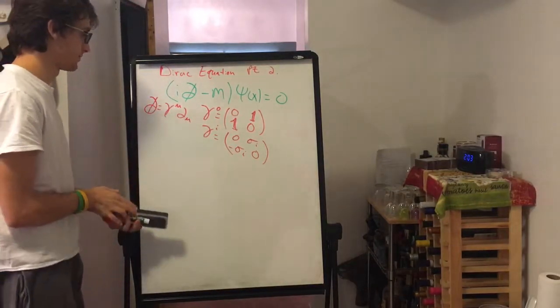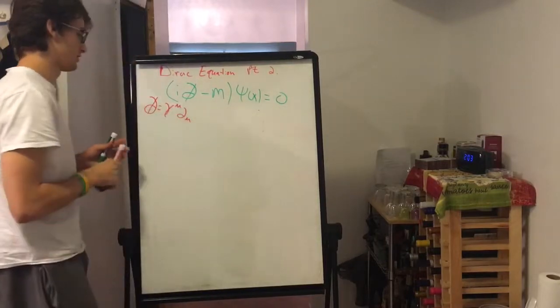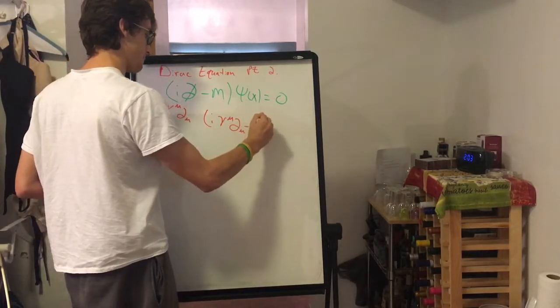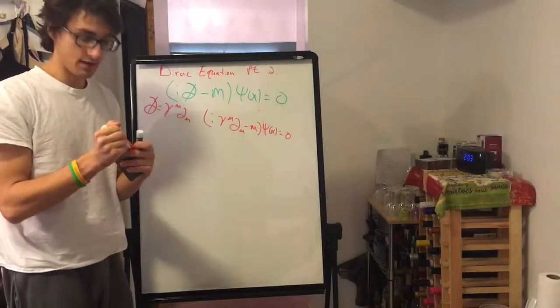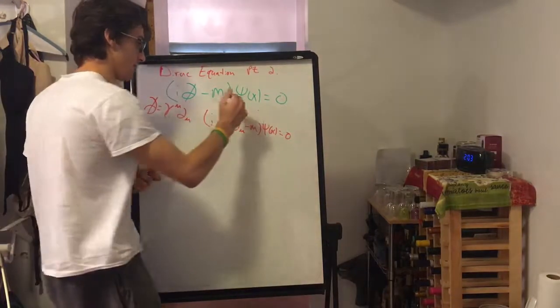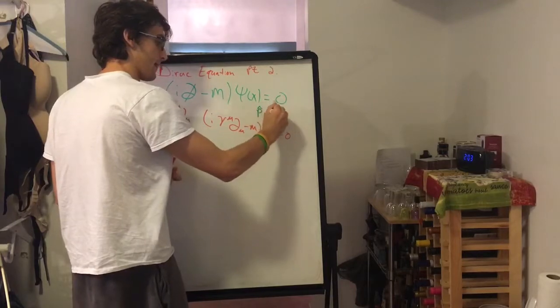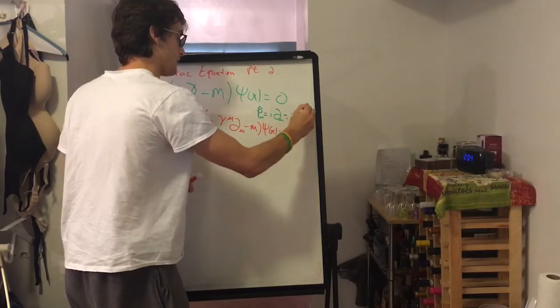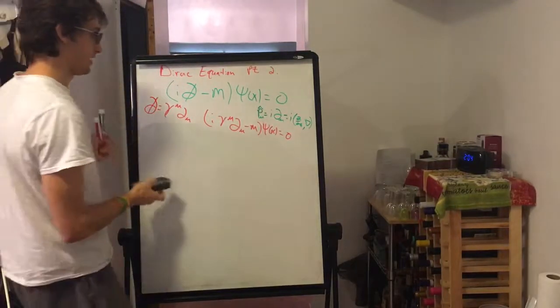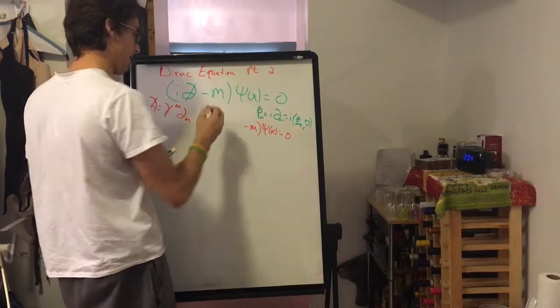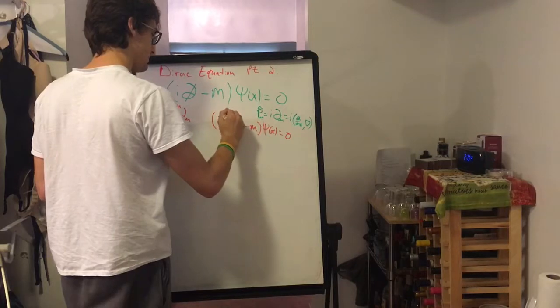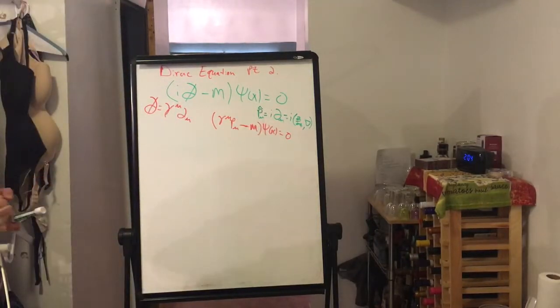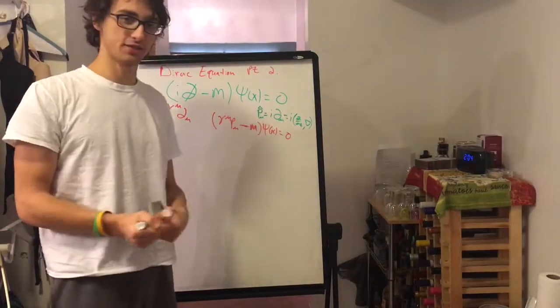So I could also write the Dirac equation just as i gamma mu del mu minus M. Now, the momentum operator is just i del mu, P mu. That's just i d by dt, the gradient. So now we could rewrite this in the form gamma matrix P mu minus M. All right, so we want to find the solution. So let's see what this looks like when we expand it.